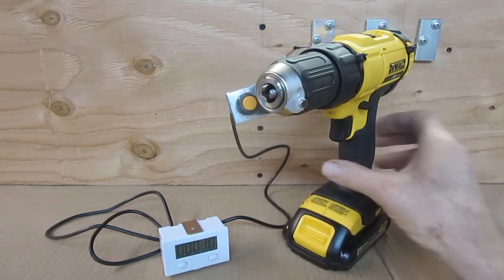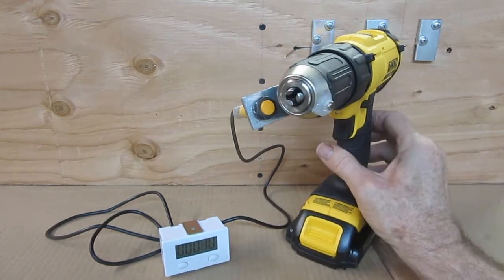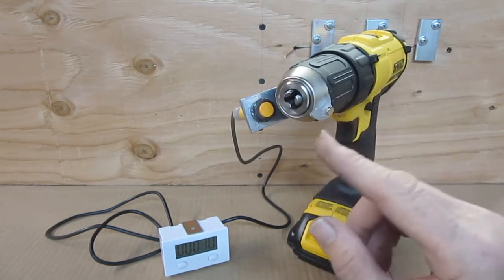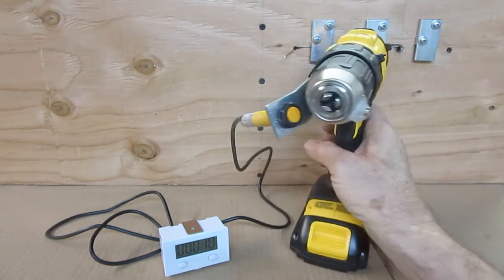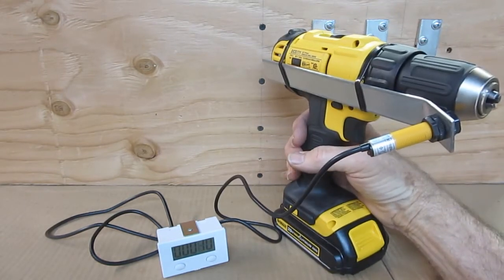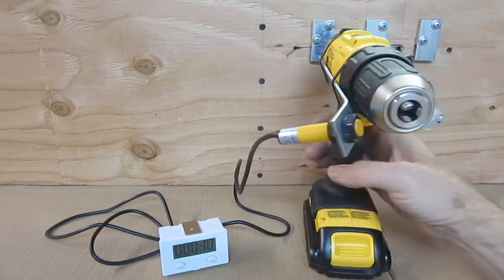This came up on eBay and it came up as a kit. I knew right away when I saw this that I was going to be able to mount the magnet to the chuck and mount this sensor somewhere on the body of the drill.